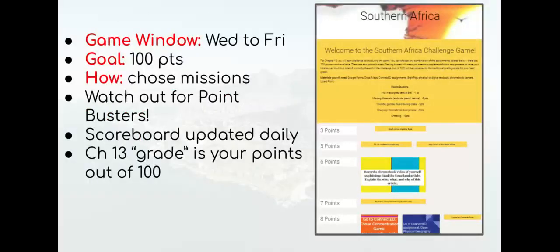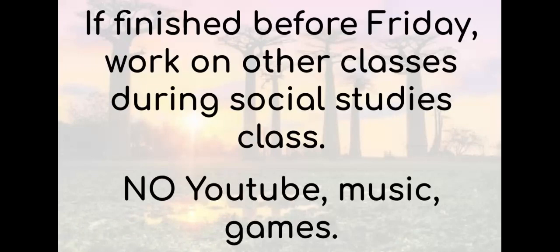Let's review. The mission game starts today and ends this week. Your goal is to earn 100 points through missions that you choose from the Google site list. Watch out for point busters. Your final score of 100 will be your test grade for this unit. For students in class, if you can complete your 100-point mission before the last day, work on other class work. This means no YouTube, games, or music — those are point busters.